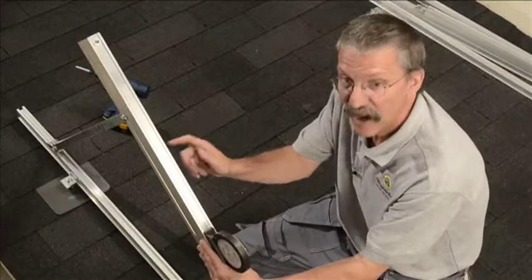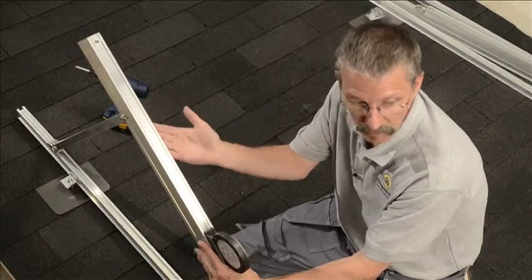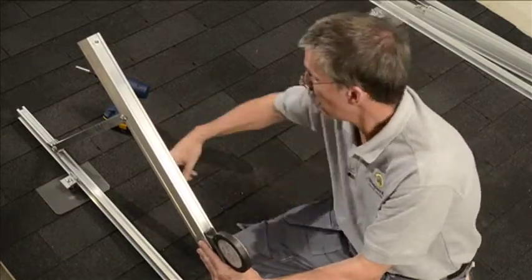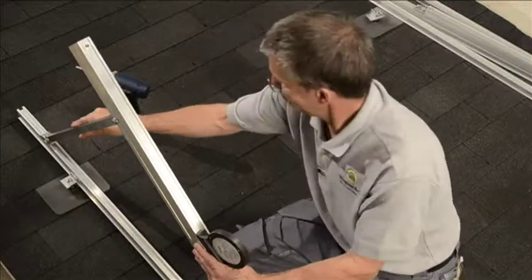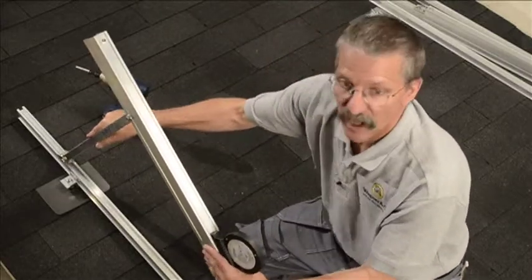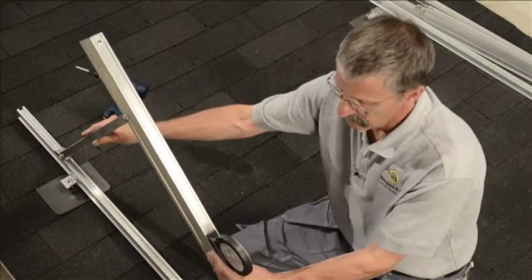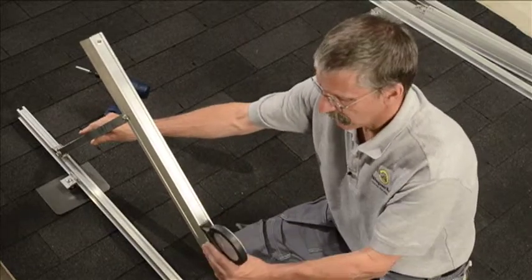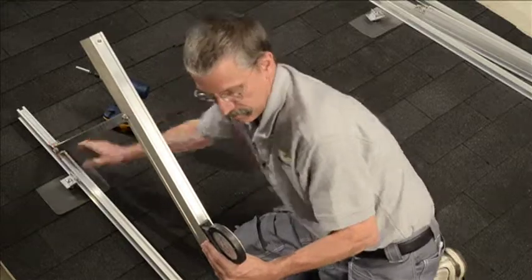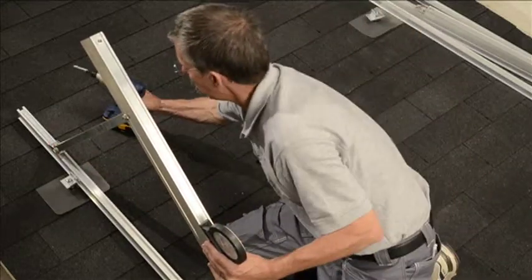So the cool thing about this TRICK-F is I can adjust the tilt to get my ideal orientation. With this bolt loosened on my tilt leg, I can slide this back and forth. Now for my latitude, I'm going to set my collectors to 45 degrees. So I use my tilt meter, set the leg where I want it, and tighten it down.